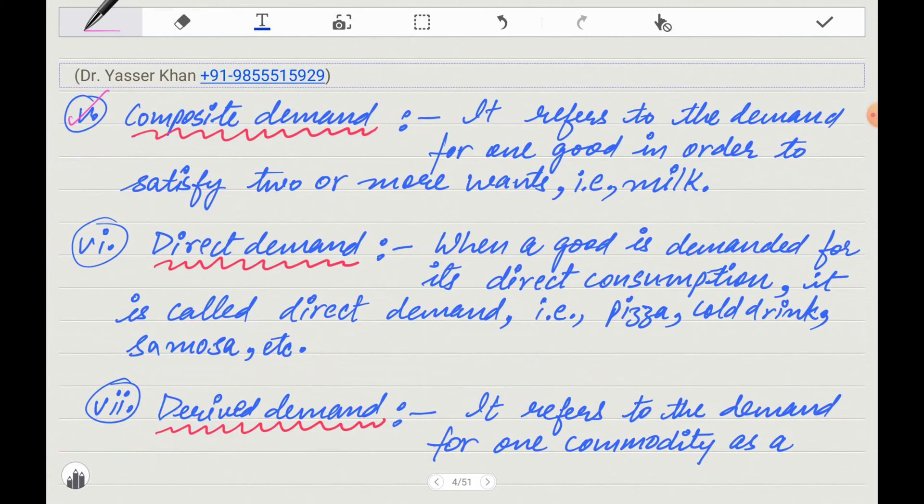Next, direct demand. When a good is demanded for its direct consumption, it is called direct demand. Examples include pizza and cold drinks.